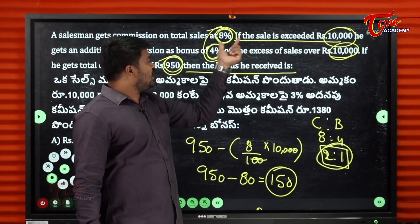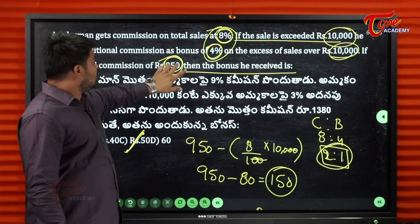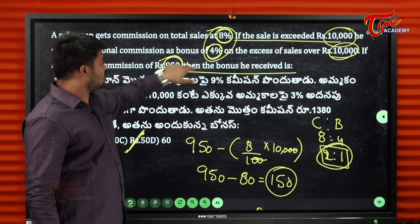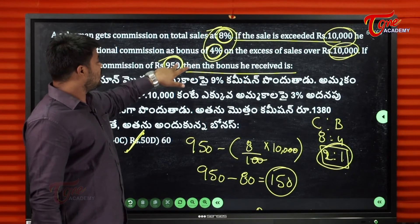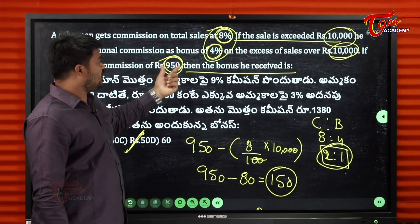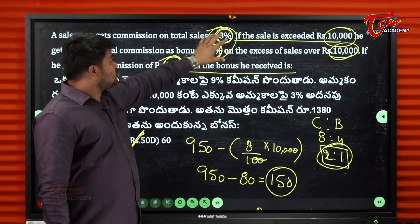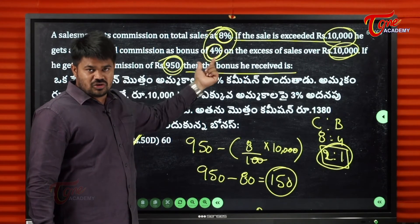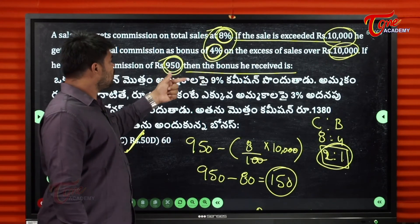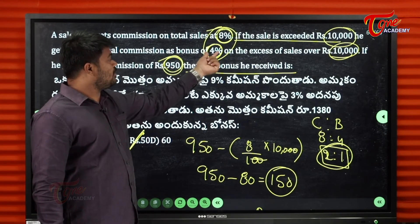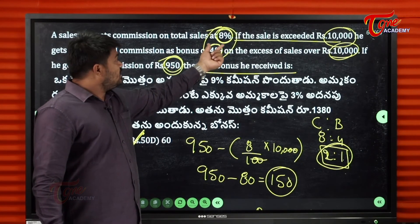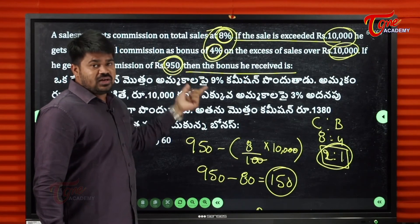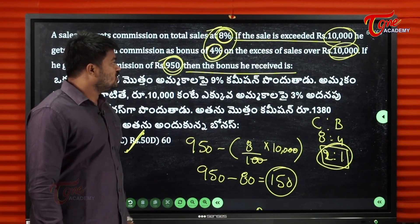So first 10,000 gives 8% commission which is 800. The difference between 950 and 800 is 150. We have 8% to 4%, a 2 to 1 ratio. So 3 total parts, and bonus is one part: 1/3 × 150 = 50 rupees.